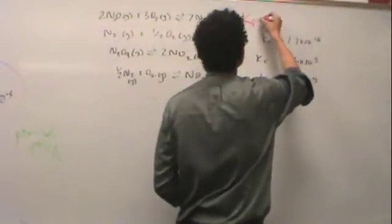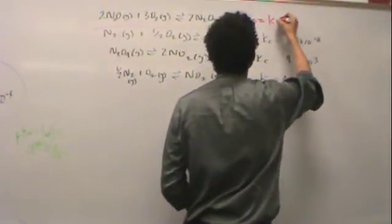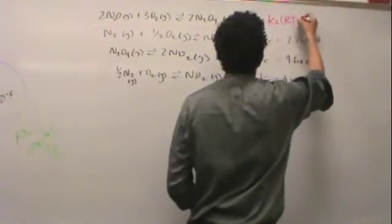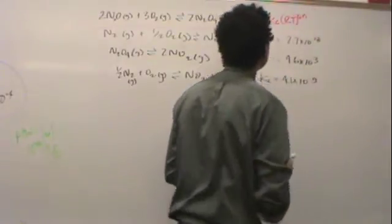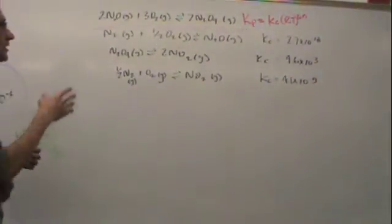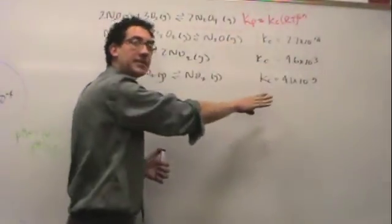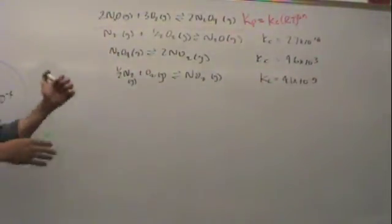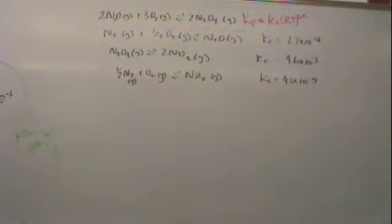I will have to use this formula: Kc equals RT to the delta N. So I'm going to get a Kc total because these are all Kc's. I'll get that, I'm going to convert that to Kp, and then I'll finally be done.